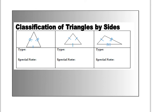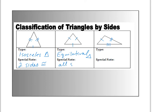The first one has two sides that are congruent — that is called an isosceles triangle, and the special note is two sides are congruent or equal. The second one is called an equilateral triangle. Equilateral triangles will also be equiangular, so that's kind of interesting — all sides are congruent. The third type, the type with three different sides, is called a scalene triangle. Scalene means all three sides are different, so no sides are congruent.